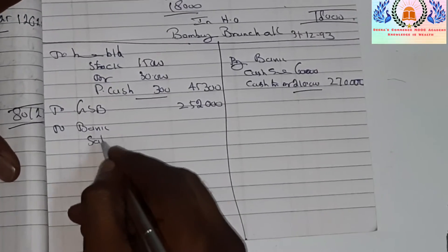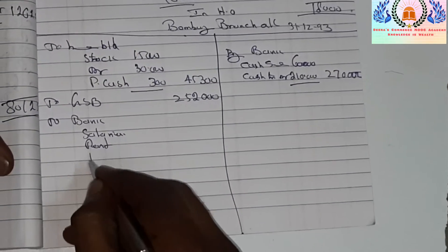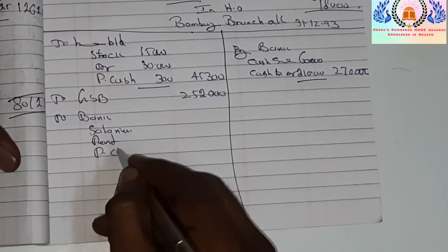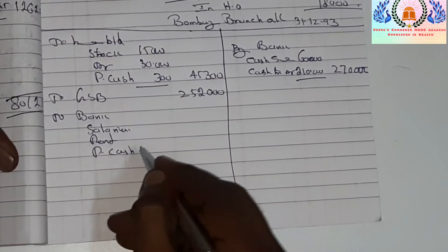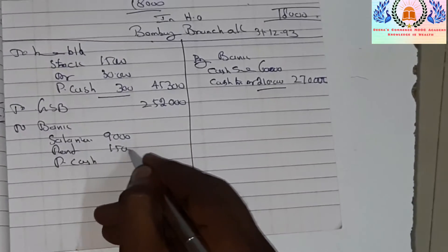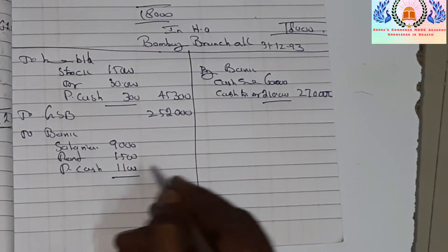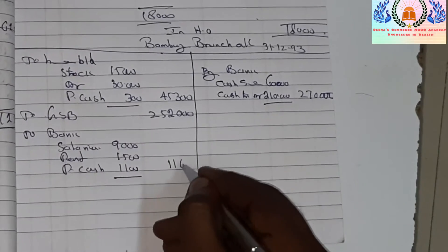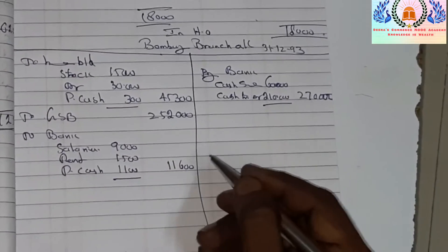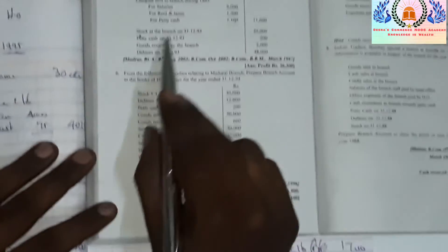The next entry is expenses made by the head office — by bank: salaries 9,000, rent 11,000, petty cash expenses 500, totalling 11,600 rupees.